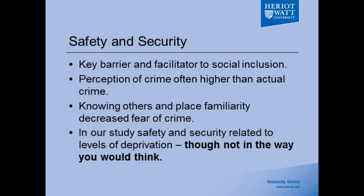Safety and security came up in a number of communities. Interestingly, those in more deprived, lower income communities had a heightened sense of safety compared to those in higher income communities. People in higher income communities often had a perception of crime rather than actual crime, whereas in lower income communities there was often a stronger sense of social cohesion — people knew each other on the street — which led to a sense of security when using public spaces and made them more likely to come out into the community.